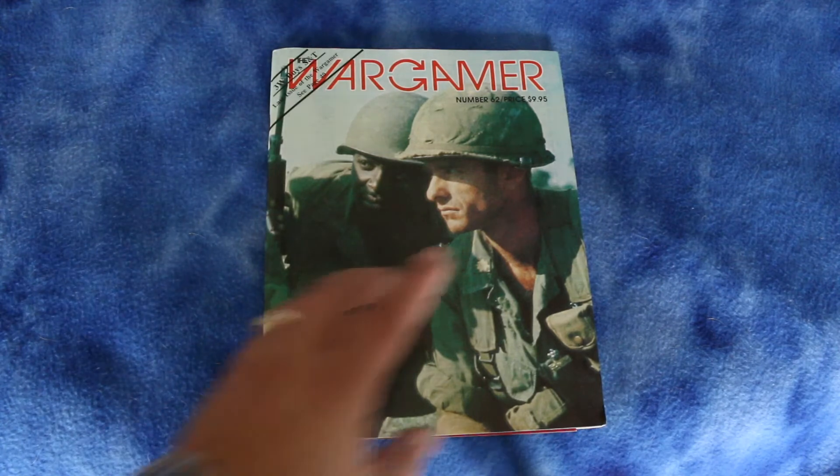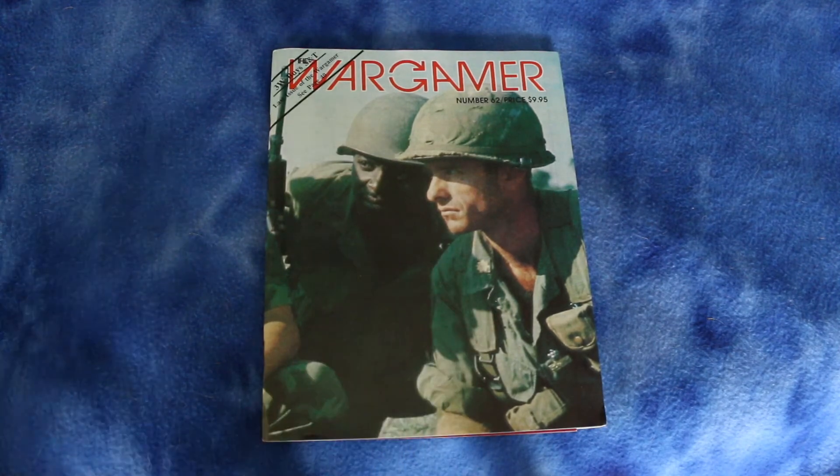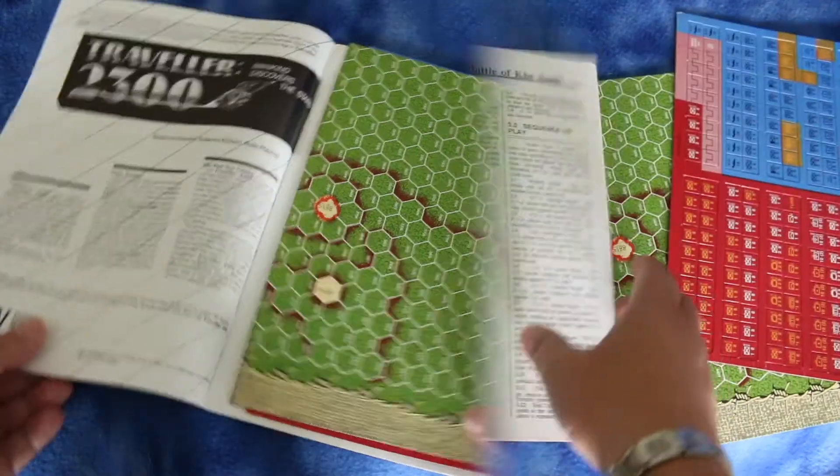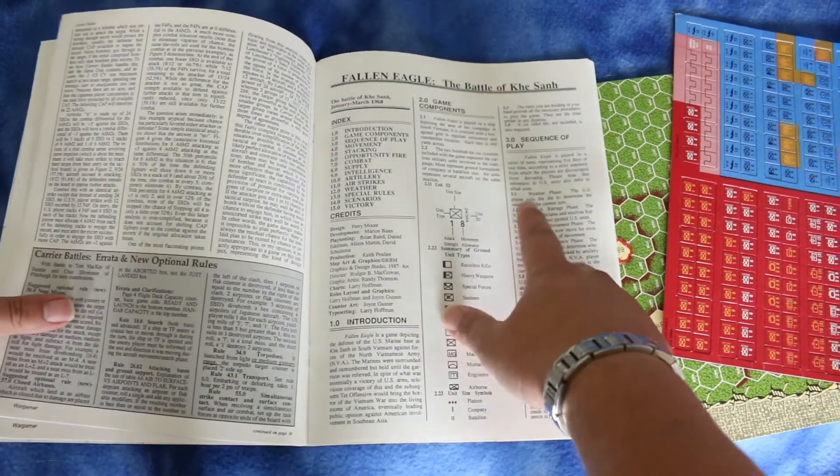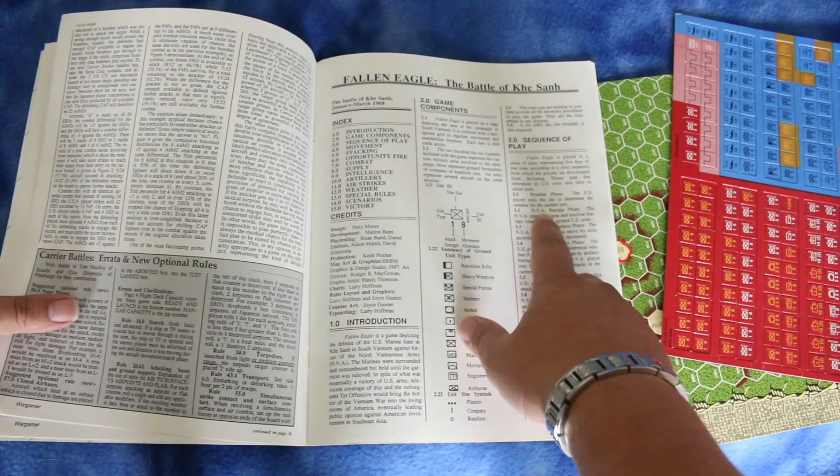Most wargame magazines that include a game, let's see what the game is in here. It's Fallen Eagle, the Battle of Khe Sanh. Here's a sequence of play. Here's a weather phase, NVA barrage phase, that's definitely necessary in this battle.